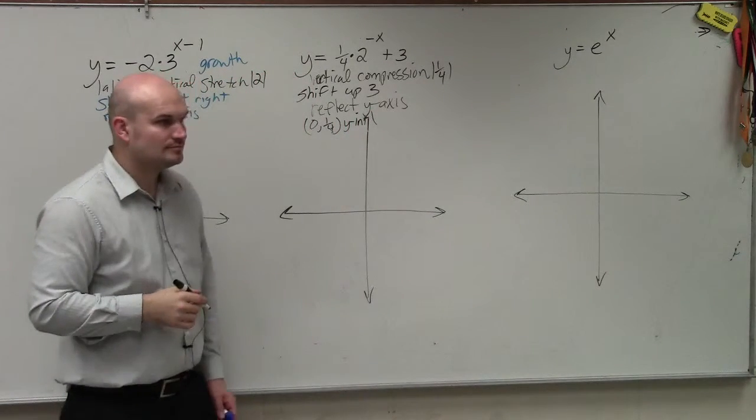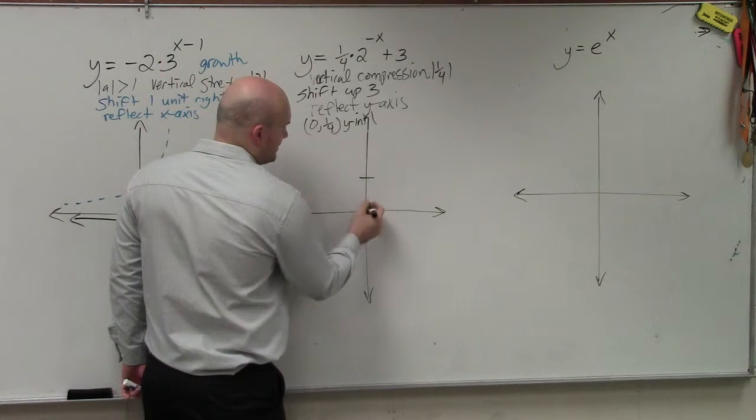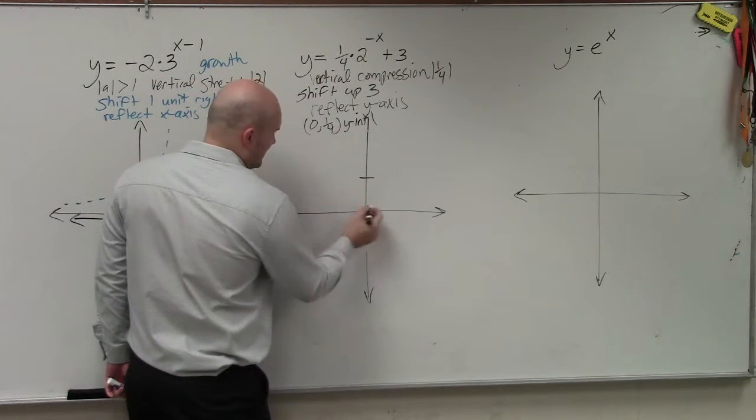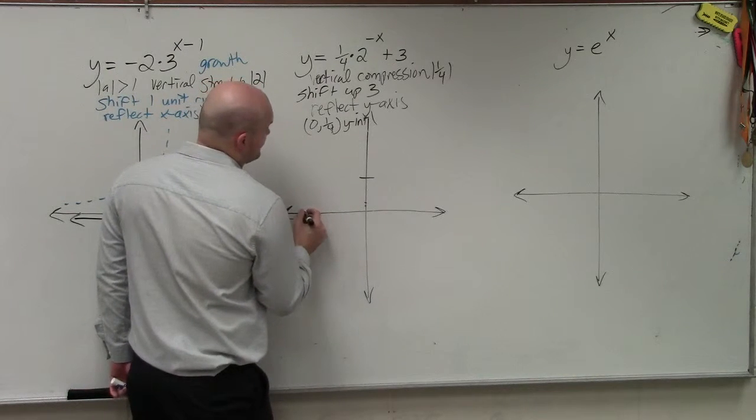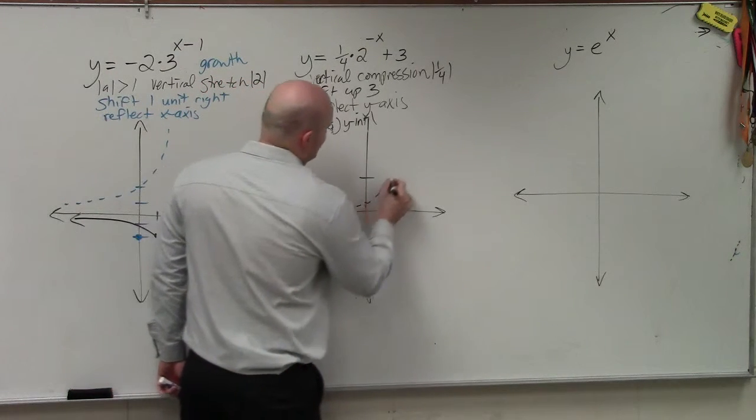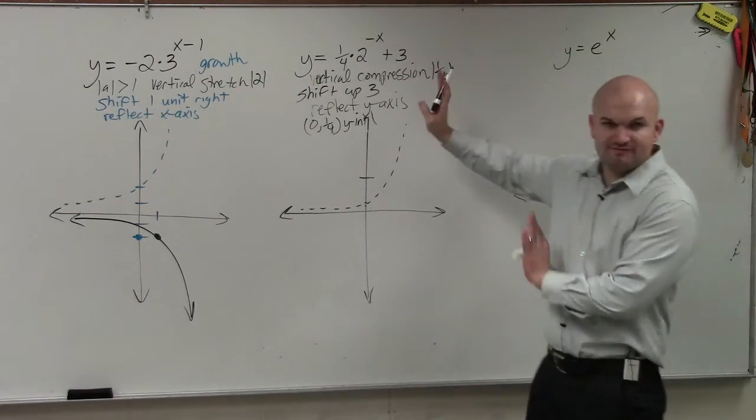Right? So if originally, if here's 1, then like 1 fourth would be like right there. Right? Like right here. So originally, if the graph, I'm just going to graph kind of something like this. I just want to show you guys the reflection. Without the shifting or anything like that.